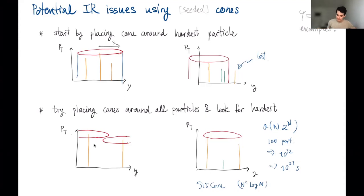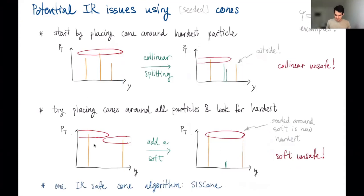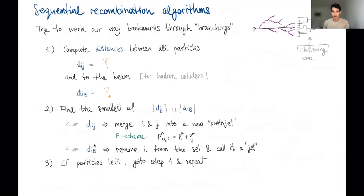Since cone algorithms are no longer in use, let me move on to sequential recombination algorithms. The idea is to work backwards through the QCD branching: if a quark subsequently emits gluons, we want to reverse that process and recover the initial quark.